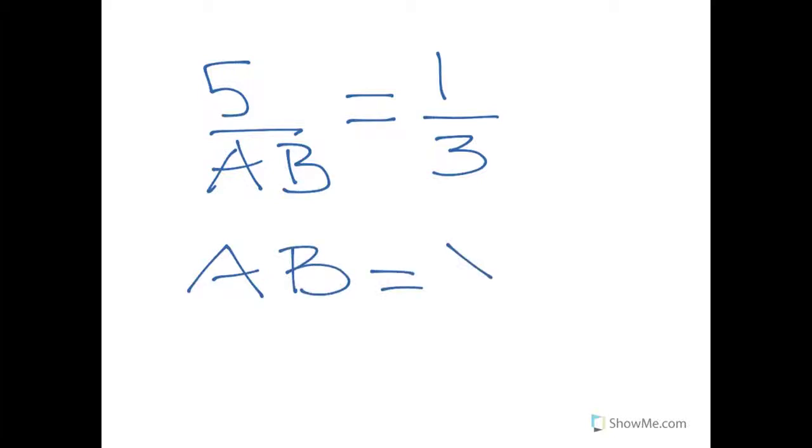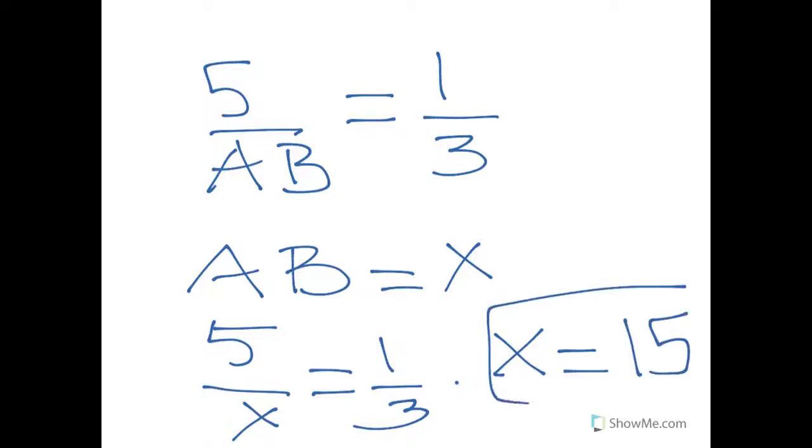We know 5 over AB equals 1 over 3. Using cross multiplication, we can substitute AB as X. So we can write 5 over X equals 1 over 3. Cross-multiplying, 5 times 3 equals X, because you always cross-multiply the numbers diagonal to the other number. So X equals 15. So that would be the answer.